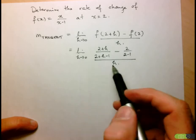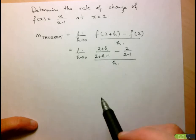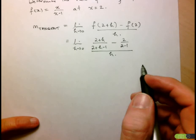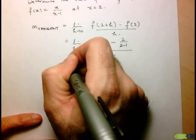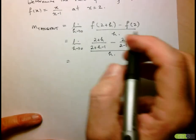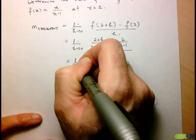I can't just input h equals 0 into this expression because I'll have a 0 in the denominator giving me something that's undefined. So let's see if we can do some algebra to eliminate that issue. As h approaches 0, let's simplify.